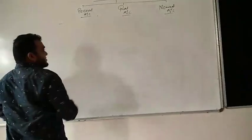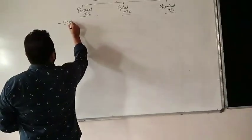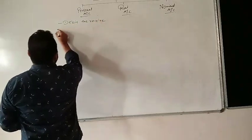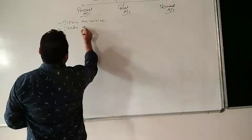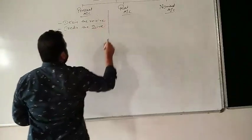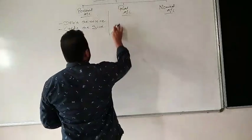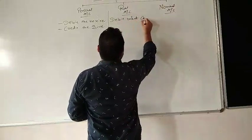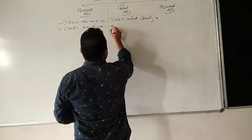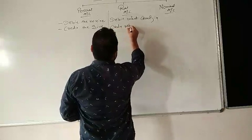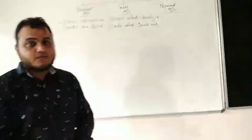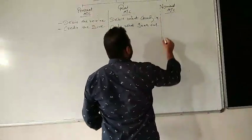The rule of the Personal Account, as we discussed last time: debit the receiver and credit the giver. That is the rule of the Personal Account. For Real Account, the rules are: debit what comes in, and credit what goes out.